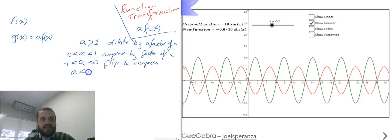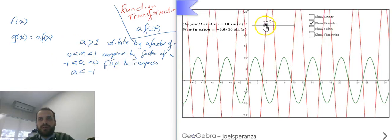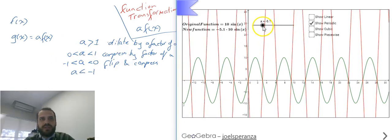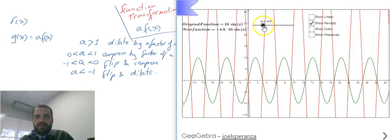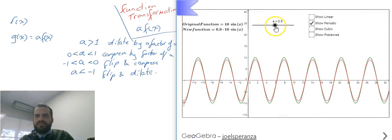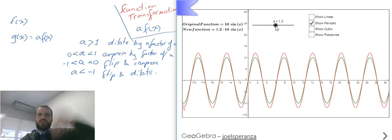And then, if a is less than negative 1, like negative 5, or negative whatever, you can see it's going to flip and dilate. Alright, there's our formalized notes for a times f of x. Fairly intuitive.